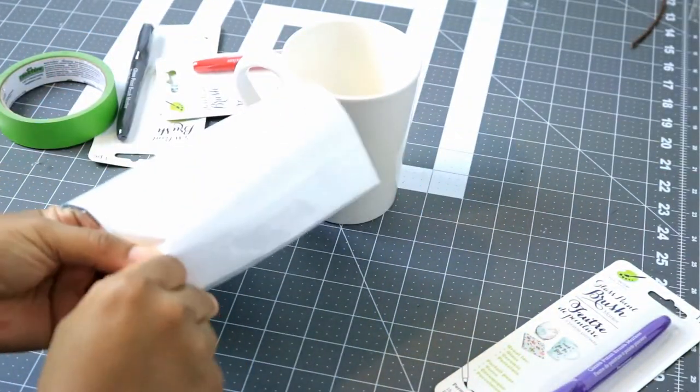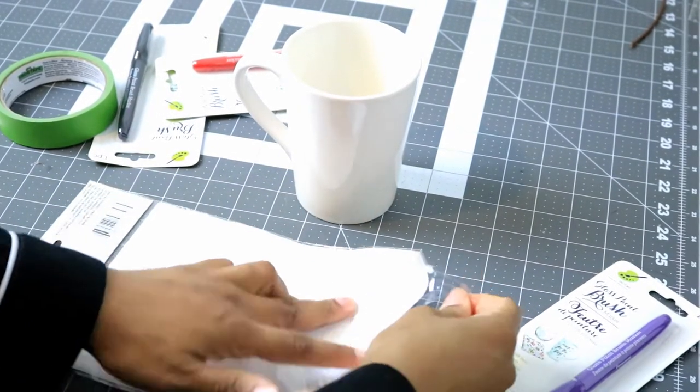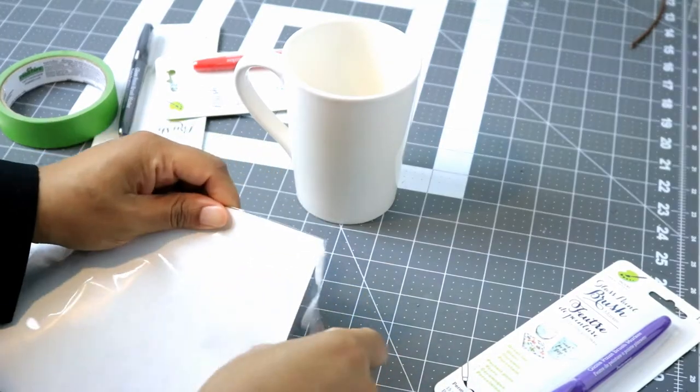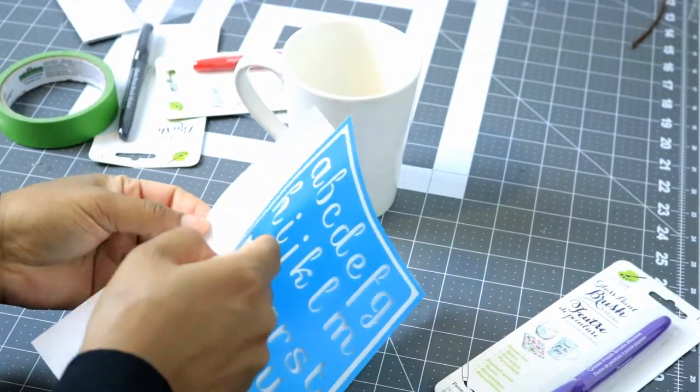I really hate my handwriting so I'm going to be using these Dollar Tree stencils to help me write 'mom's tea' because I love tea on this mug and we're going to see how it works.